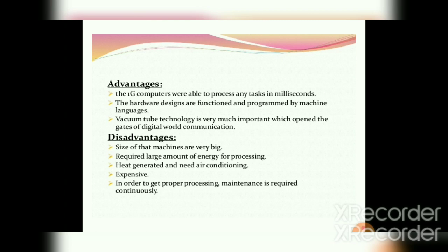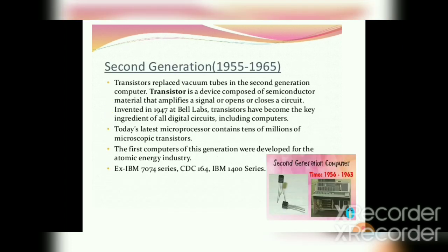Now let us see the second generation of computers. In the second generation, the main component is transistors — that is, the vacuum tubes are replaced with transistors. These transistors are the key components for the development of digital circuits, and even today's computers contain microscopic transistors. These computers were developed for atomic energy industries.